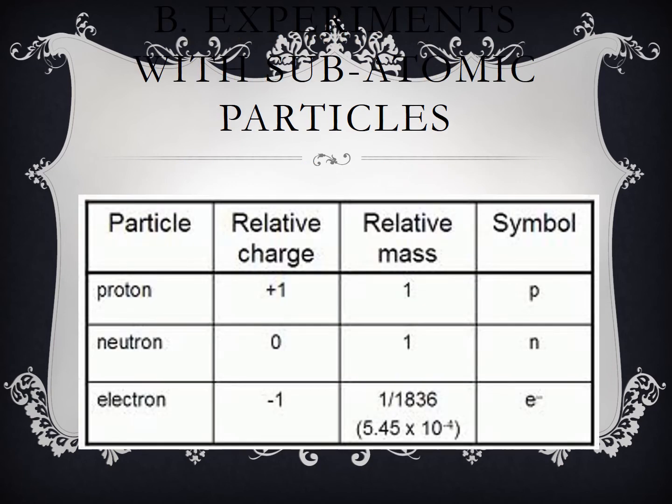You can see this chart. It's also in your text. Here's P for proton, N for neutron, E negative for electron. Some people put P plus for positive, but you can see the relative mass is very small for electron compared to what a proton and neutron is.